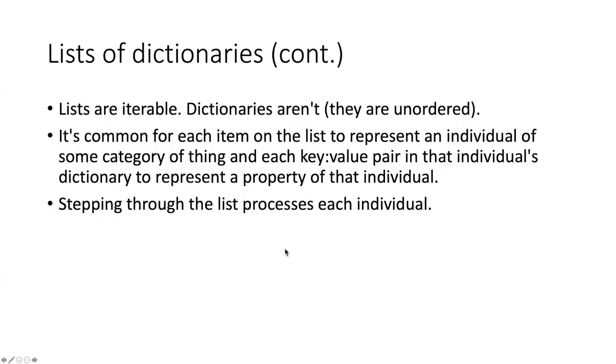And because the rows in this sort of table, or we could say the items in the outer list are iterable, it allows us to step through the list of individuals and process each one. Either we can do something with each one, we can print something with each one, or we can check something about each one. And we'll see how we can do that in some of the code examples.